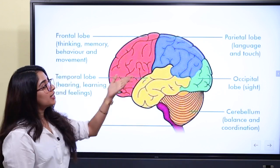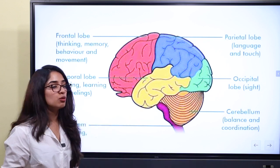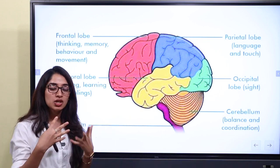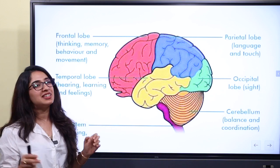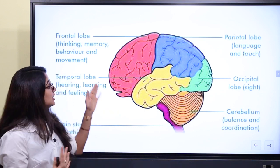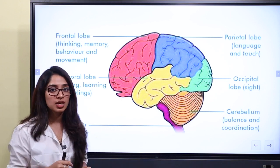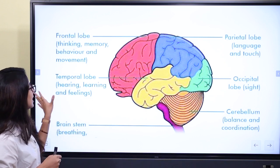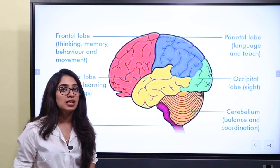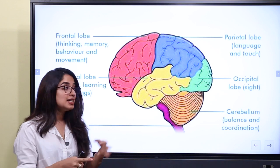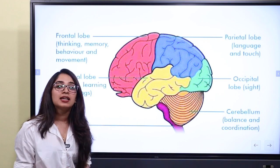The parietal lobe is involved in language. The occipital lobe is responsible for vision. The frontal lobe handles thinking, behavior, memory, and movement. The temporal lobe is associated with hearing, learning, and feelings. These are the four lobes of the cerebrum and their respective functions.